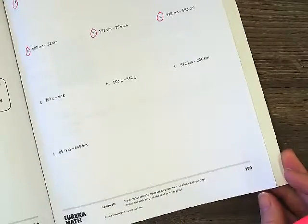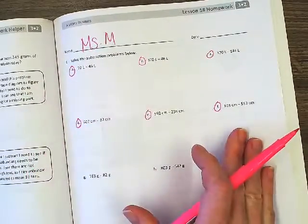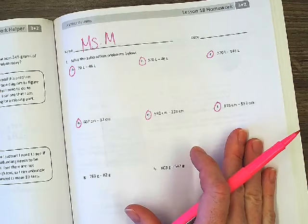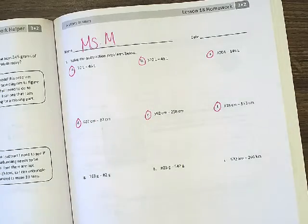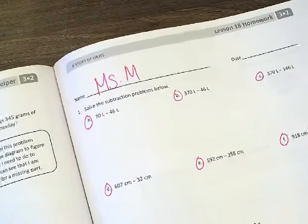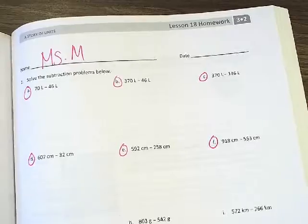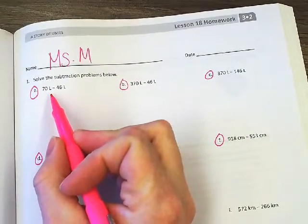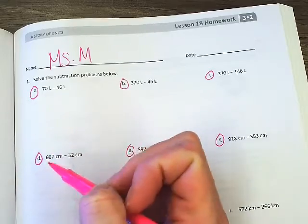Let's flip back to page 159. Pause at any point if you need to. We're going to do A through, well you're going to do A through F, I'm going to do a couple of these with you. Let's start off with letter A. Let's get a little bit closer here.